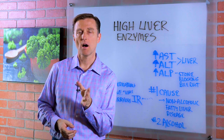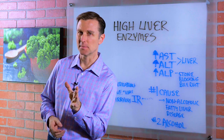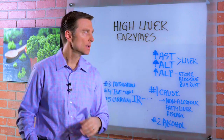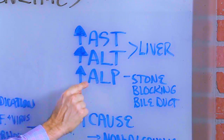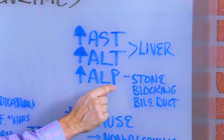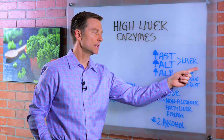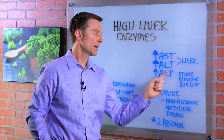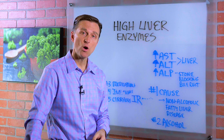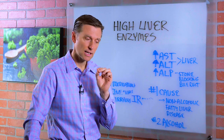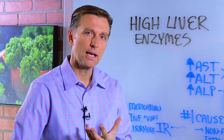I wanted to talk about what causes high liver enzymes. You'd have high AST, ALT, or ALP. So if AST and ALT are high, it's mainly the liver. If ALP is high, chances are you could have a stone that's blocking a bile duct and you're having the bile backing up.